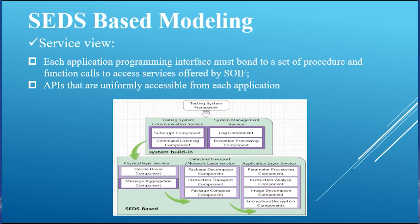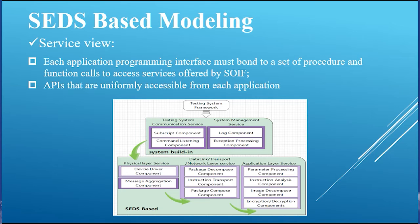The second view is the service view. Each application programming interface must bind to a set of procedure and function calls to access services offered by the spacecraft onboard interface. The service view models abstract onboard services as a set of components which correspond to the service access points exposed by the spacecraft onboard interface stack. From the figure, we can see that the services are divided into two layers: testing system built-in services, and the spacecraft electronic datasheet based services. Each component corresponds to a particular category of protocol model components.